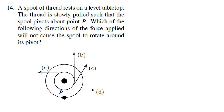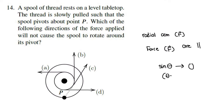Another conceptual question about rotation: a spool of thread rests on a level tabletop, and we want to know which direction of force leads to no rotation. We need the radial arm R and force F to be parallel, because if they're parallel, the sine of the angle between them goes to zero. In answer choice C, the radial arm and the force direction are along the same line with the same angle — so that sine component is 0 and there's no net torque, though there is translation.